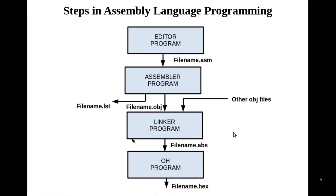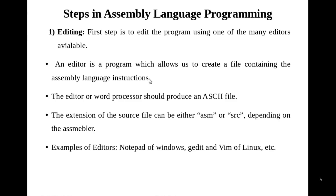The first step is editing. An editor is a program which allows us to create a file containing the assembly language instructions. The editor should produce an ASCII file — a file containing ASCII codes. The extension of the source file can be either .asm or .src depending on the assembler. Examples of editors are Notepad on Windows, and gedit and vim on Linux. Whatever editor we use, it must be able to produce an ASCII file.